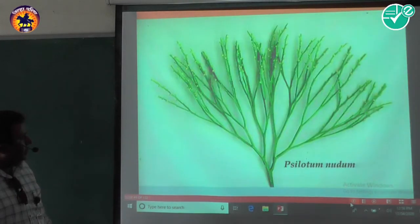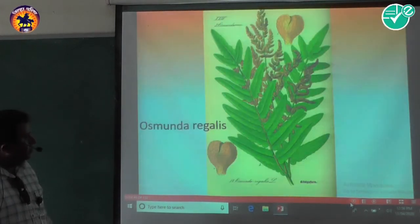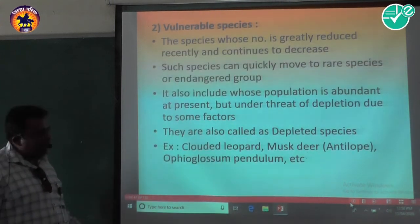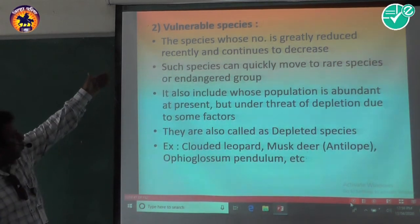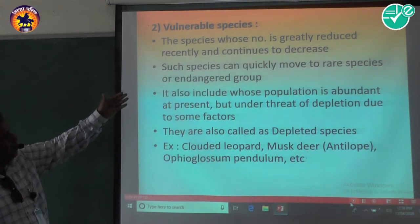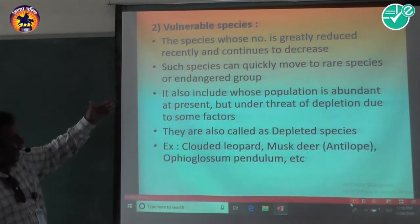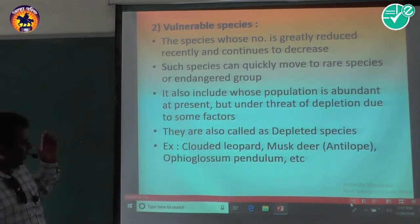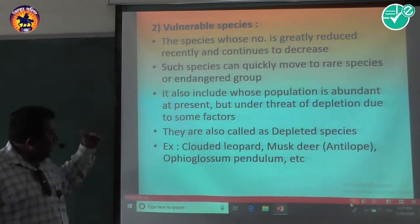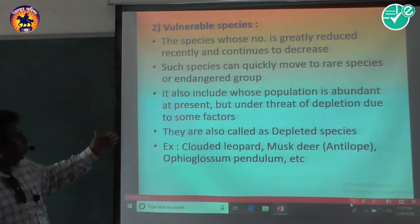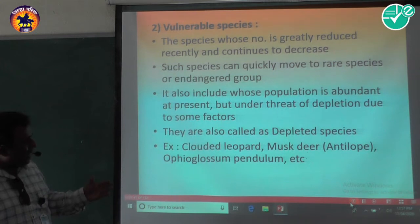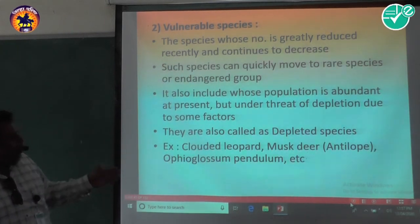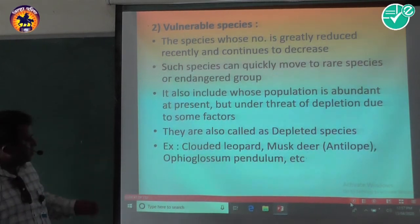The second category is Vulnerable Species — species whose numbers are greatly reduced recently and continue to decrease. Such species can quickly move to the rare or endangered category. This also includes species whose populations are abundant at present but are under threat of depletion due to some factors. They are also called depleted species. Examples include the clouded leopard, musk deer, and Ophioglossum pendulum.